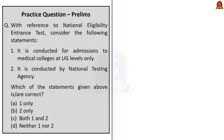Moving on: 'With reference to NEET, consider the following statements — Statement 1: It is conducted for admissions to medical colleges at UG level only. Statement 2: It is conducted by the National Testing Agency. Which of the statements is/are correct?' Options: A — 1 only; B — 2 only; C — both 1 and 2; D — neither 1 nor 2. Statement 1 is wrong because NEET is conducted for PG levels as well. Statement 2 is correct — it is conducted by the National Testing Agency. So the correct answer is Option B: 2 only.